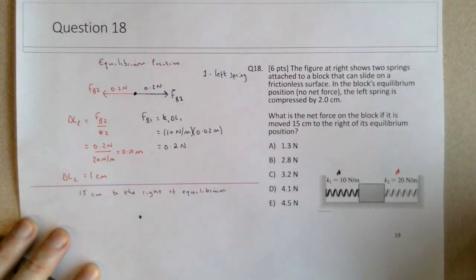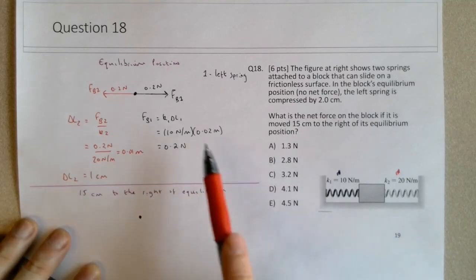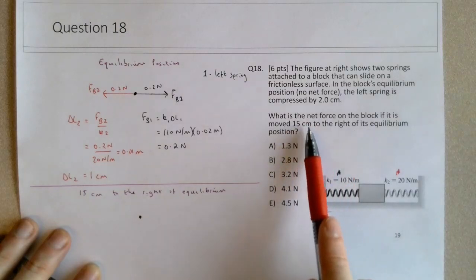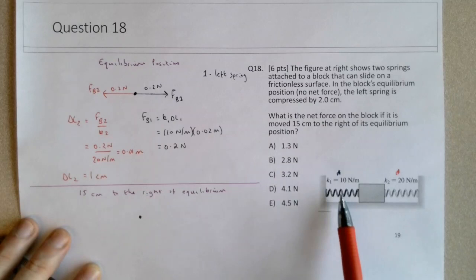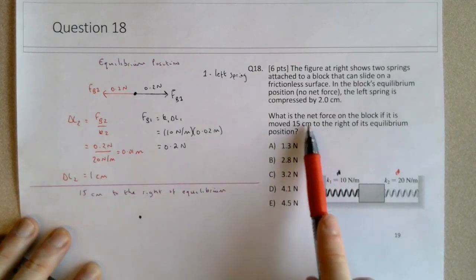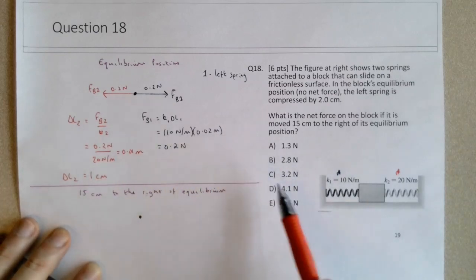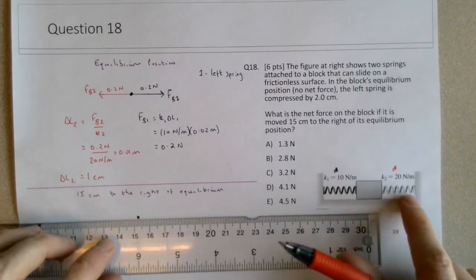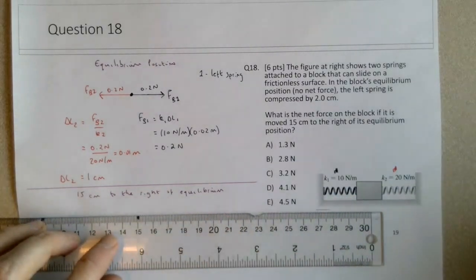Again, thinking about the horizontal forces. In the no net force position, the left spring, spring 1, is compressed 2 centimeters. So if you move it 15 centimeters to the right, 2 centimeters will bring it back to equilibrium, plus another 13 centimeters. So it means that it's stretched 13 centimeters. The left spring is stretched 13 centimeters when you move it 15 centimeters to the right. So that's negating the first 2 centimeters compression, plus another 13 in stretching. So that means that if it's stretched 13 centimeters to the right, spring 1 will pull back to the left with a force.